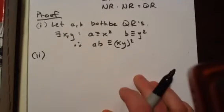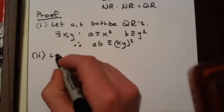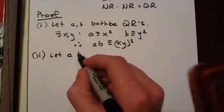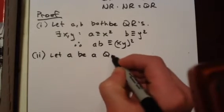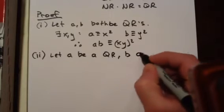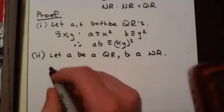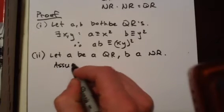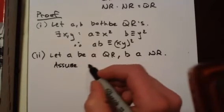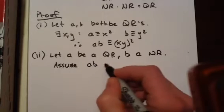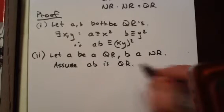The second one we are going to prove by contradiction. So let A be a quadratic residue, B a non-quadratic residue, and assume for the sake of contradiction AB is a quadratic residue.